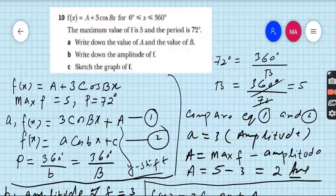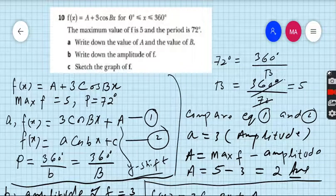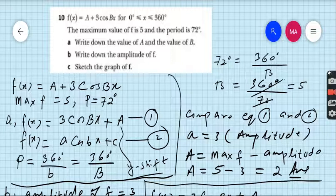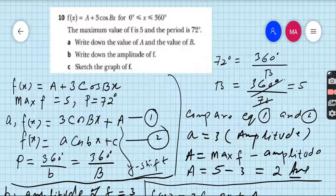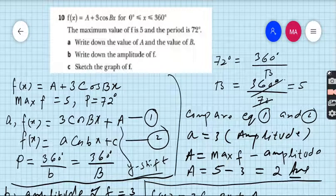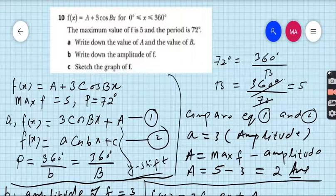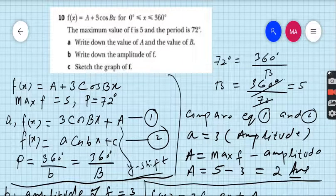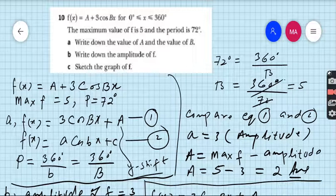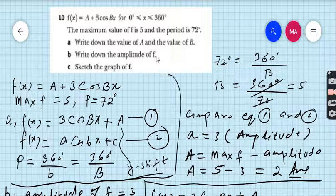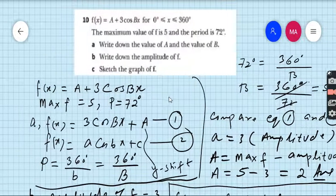Question number 10 you can see on your screen: f(x) equals A plus 3cos(Bx) for the domain of 0 to 360 degrees. The maximum value of f is 5 and the period of the function is 72 degrees. Part A: write down the value of A and the value of B. Very easy.